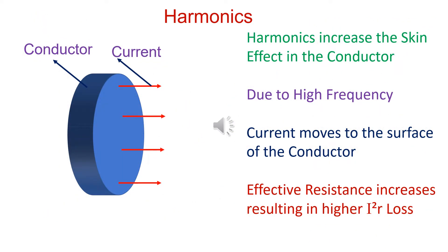Harmonics have a number of disadvantages. An example is skin effect. At high frequency, current flows from the skin of the conductor. Effective area of the conductor decreases. This results in increase in effective resistance, resulting in higher I squared R loss.